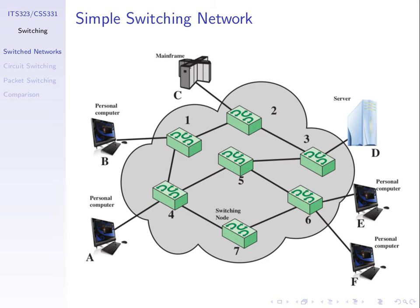In this example picture, we have six devices called stations. Stations are those devices that produce and consume data — the six devices A through F on the outside: some PCs, a mainframe, a server. These are our end user devices that will create and receive data, and we'll generally refer to them as stations in our network, sometimes later as hosts. With six stations wanting to communicate with any other station, how many links do we need?